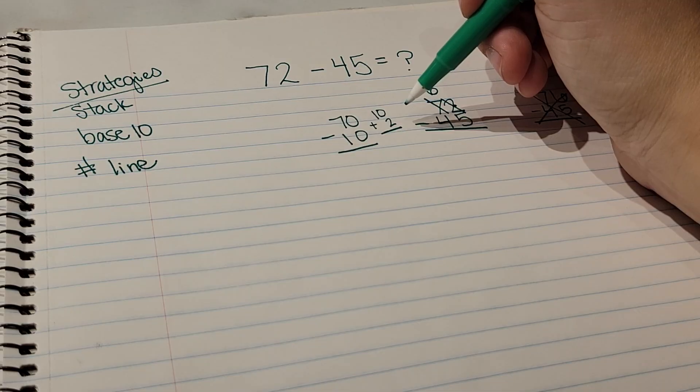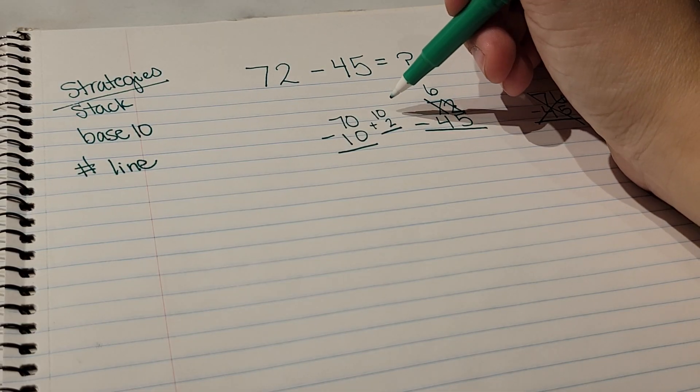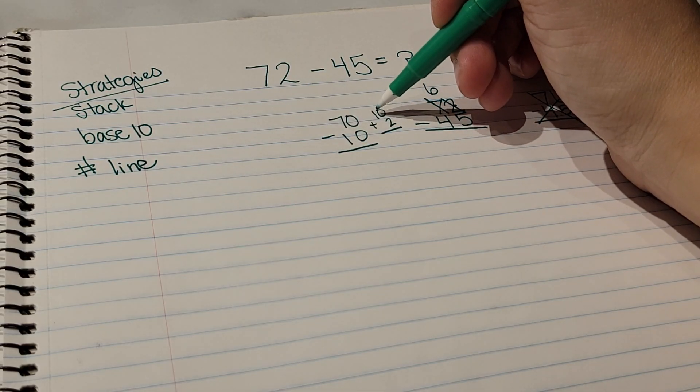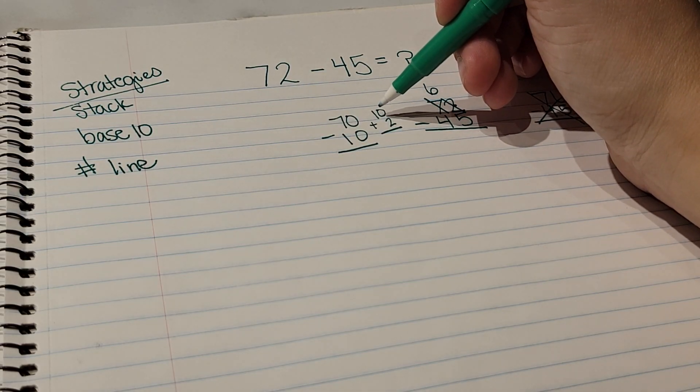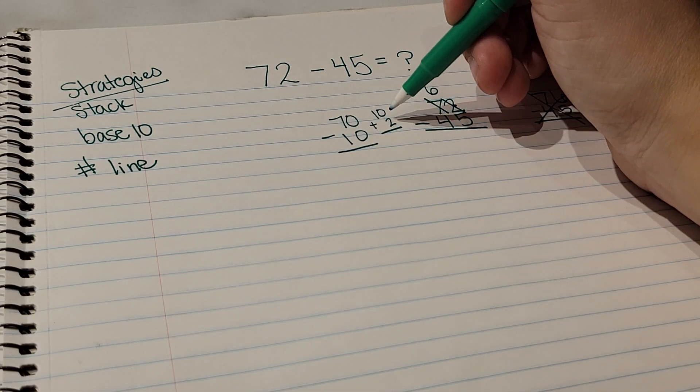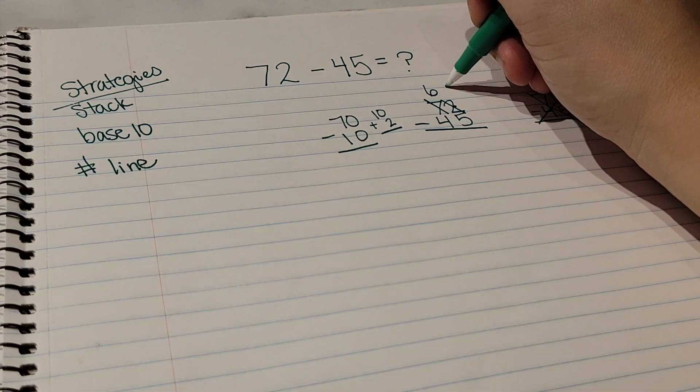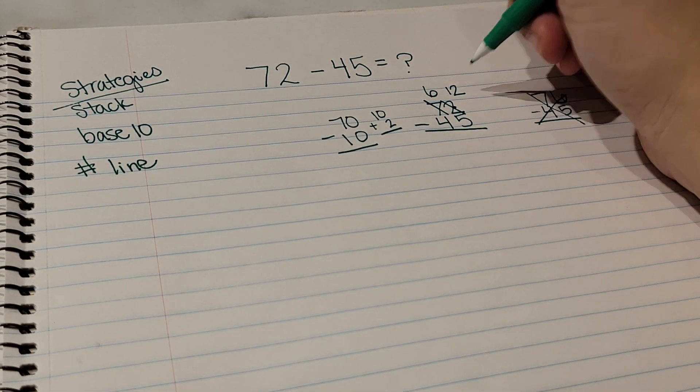So then instead of a 2, we're essentially taking 10, which we just borrowed, plus 2. And same thing here, if your child can't answer within three seconds or pretty much immediately, then I would practice 10 plus any single digit number. They should be able to do this very quickly.